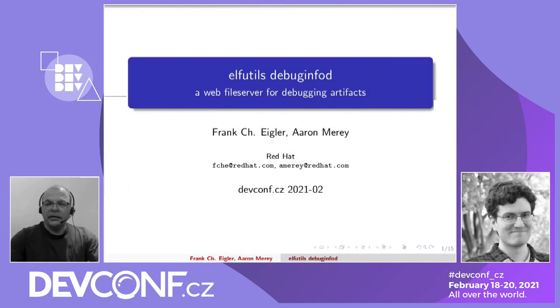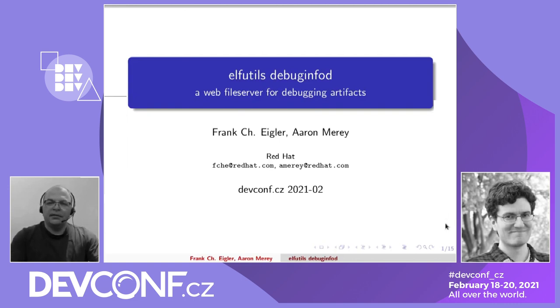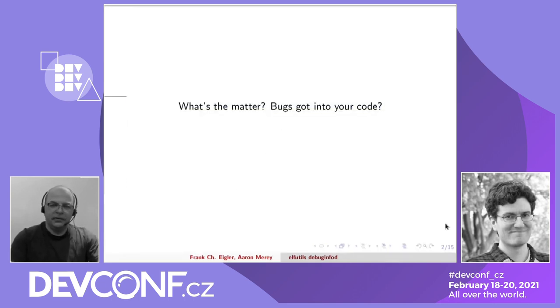Hello, my name is Frank Eichler. Aaron will be joining us shortly. Let's talk about Elf Utils Debug Info D, which is a web file server for debugging artifacts. What exactly that means, we'll find out very shortly.